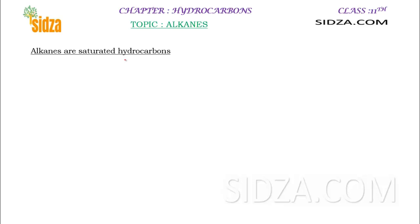What are alkanes? Alkanes are saturated hydrocarbons. That means you only find a carbon-carbon single bond in alkanes. There is no double bond or triple bond in alkanes. If there is a carbon-carbon double bond, that will be alkene. And if it is a triple bond, then it will be alkyne. So in alkanes, there is only a single bond, so it is a saturated hydrocarbon.